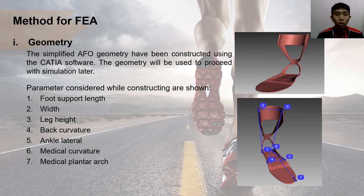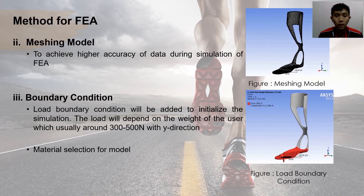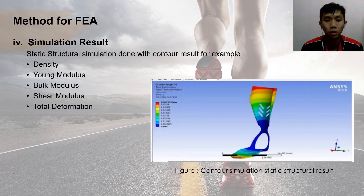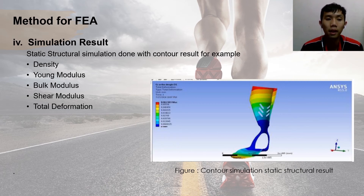The parameters considered include foot support length, width, height, back curvature, ankle lateral and medial curvature, and medial plantar arc during construction. After that, the mesh model will be done to achieve higher accuracy of data, while the boundary conditions will be decided based on the forces accepted on the model and the material selection. Lastly, the simulation results will be obtained. The static structural simulation will be chosen to get results such as density, shear modulus, and total deformation of the AFO.